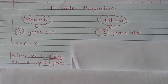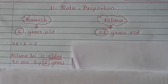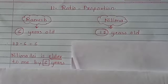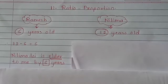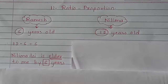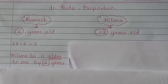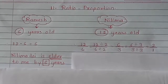Now I will ask another question to Nilima, because there is another way of comparing numbers. I will ask Nilima: can you tell how many times your age is more than Ramesh's? She did division of their ages because I asked her 'how many times.' She did division and got the answer. Let's see how she divided — she divided her age by Ramesh's age.